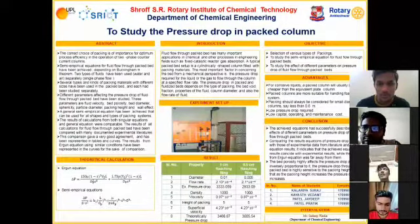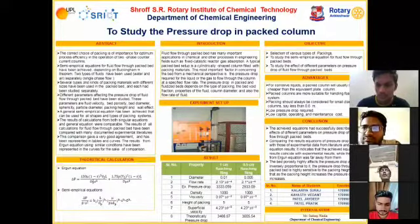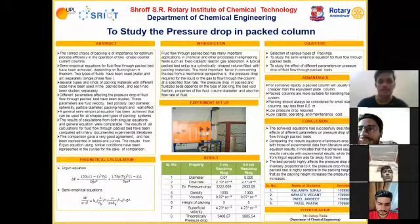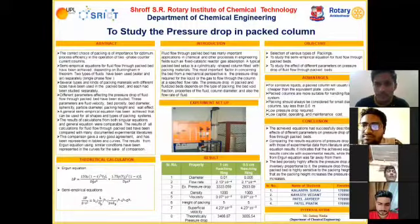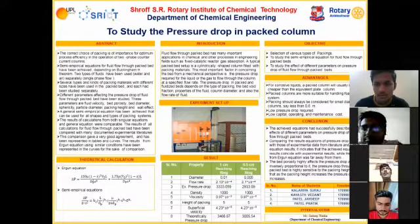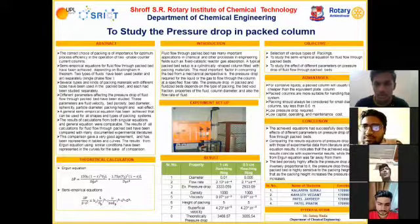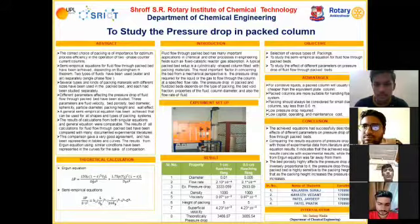The shape of the packed column is cylindrical, which can be filled with the same type of packing, or we can also use different types of packing and materials like steel, metal, or plastics. The most important factor when considering a packed bed from a mechanical perspective is the pressure drop required for liquid and gas flow through the column at a specified flow rate. Pressure drop depends on the type of packing, bed void fraction, properties of the fluid, and column diameter.